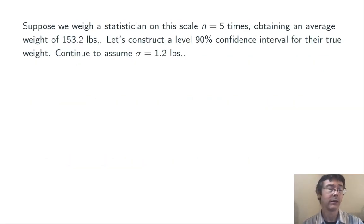Let's get a bit more specific in our example. Suppose we weigh a statistician on this scale n equals 5 times, and get an average weight of 153.2 pounds. That's a sample mean. Let's construct a level 90% confidence interval for the statistician's true weight, continuing to assume a standard deviation for the scale of 1.2 pounds.